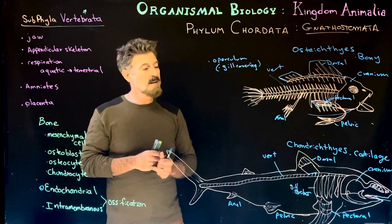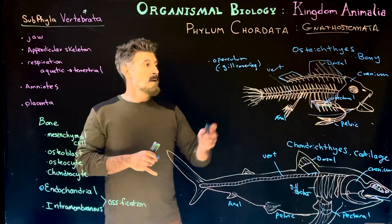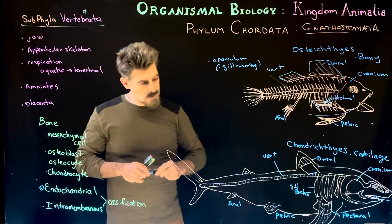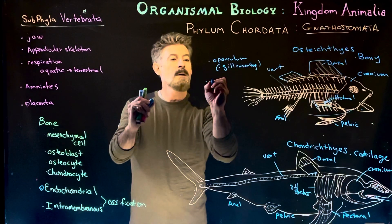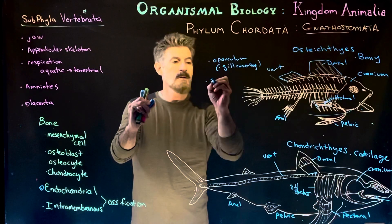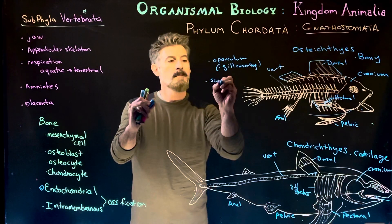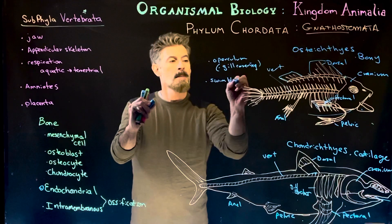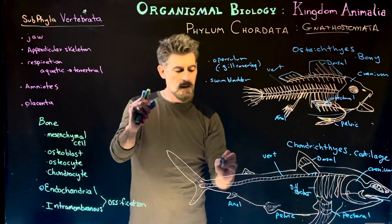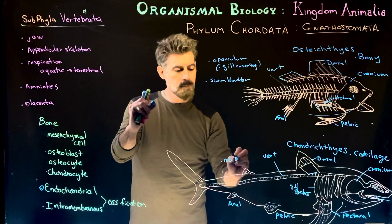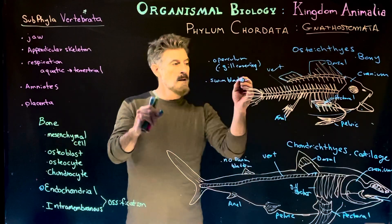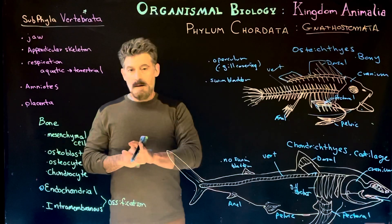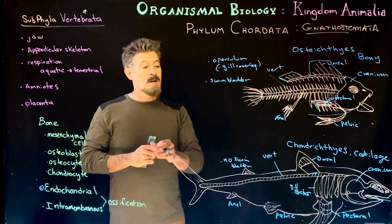Some chondrichthyes like skates and rays live in the sediment and have structures that can open, close, and pump water across the gills. But many don't have that structure. Bony fish will also typically have some type of swim bladder, which is absent in the chondrichthyes.